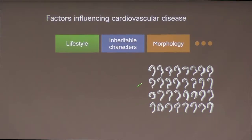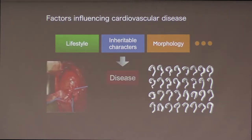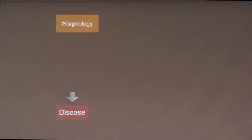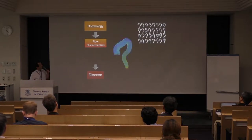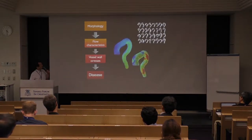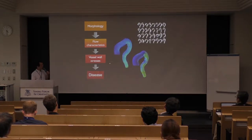Here we see examples of 32 aortic shapes showing a wide variety of geometries among individuals. These influencing factors bring about disease as a result. We concentrate on morphology because it is easy to understand and we can obtain morphology data from CT scans. If the morphology is different, the flow characteristics should be different, and this brings about different vessel wall stresses, which are strongly related to several cardiovascular diseases.